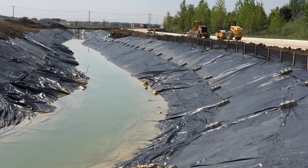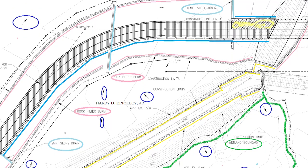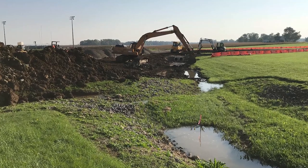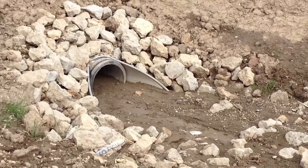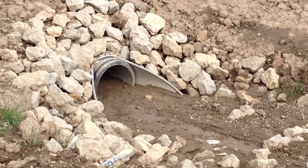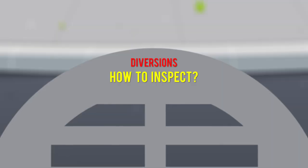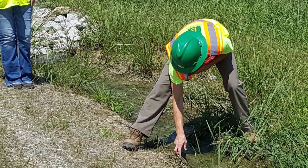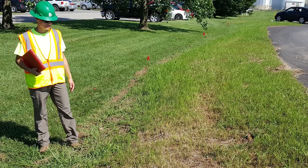How to install: Construct the diversion to dimensions and grades shown in the construction plans. How to maintain: Remove sediment from the channel to maintain positive grade. Check outlets and make necessary repairs immediately. Adjust ridge height to prevent overtopping. How to inspect: Inspectors should check for evidence of sediment in the channel as well as the outlets for evidence of sediment and to determine if they are stabilized.